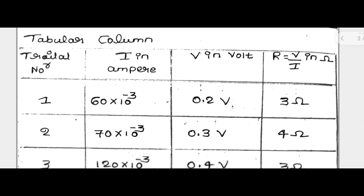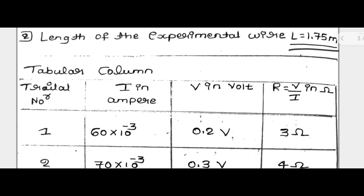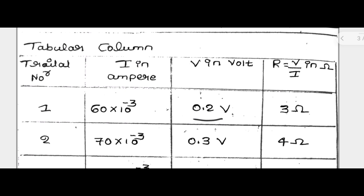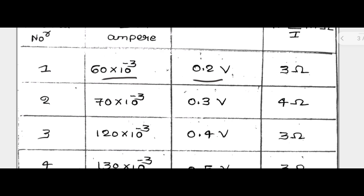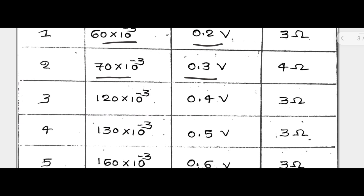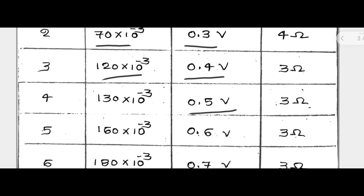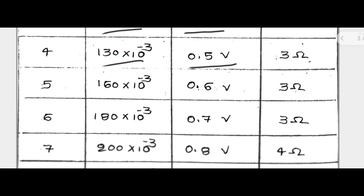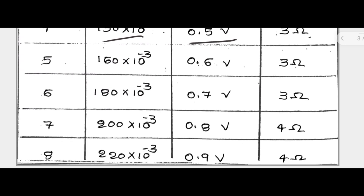These are the readings taken by the students. For 0.2 volt, the corresponding current is 60 milliamperes. For 0.3 volt, 70 milliamperes. For 0.4 volt, 120 milliamperes. For 0.5 volt, 130 milliamperes. In the same way, we have taken 8 readings in total. Minimum 3 readings are enough, but for graphical purpose I have taken more readings.